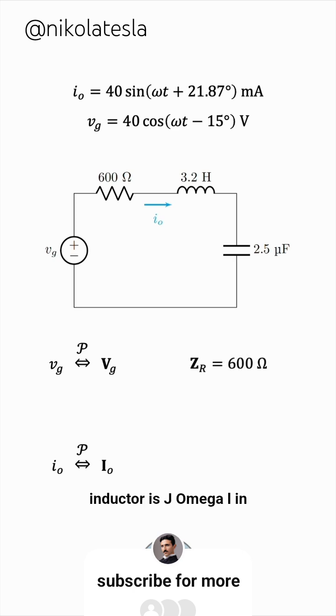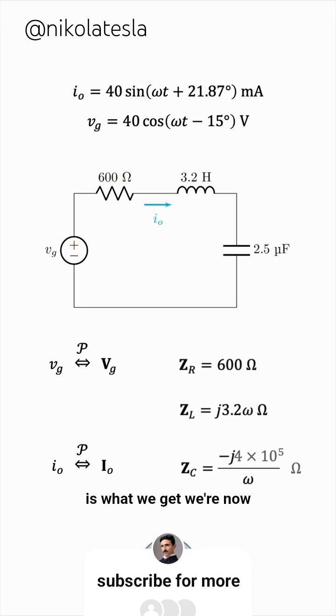The impedance of an inductor is j omega L, in this case j 3.2 omega. And the impedance of a capacitor is 1 over j omega C, or negative j over omega C. Let's plug in the value of C, and this is what we get.